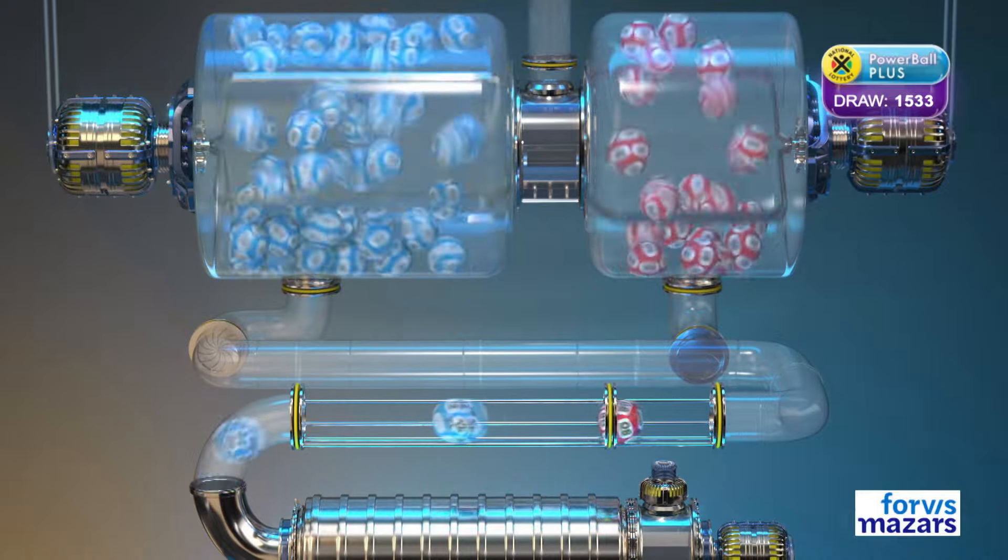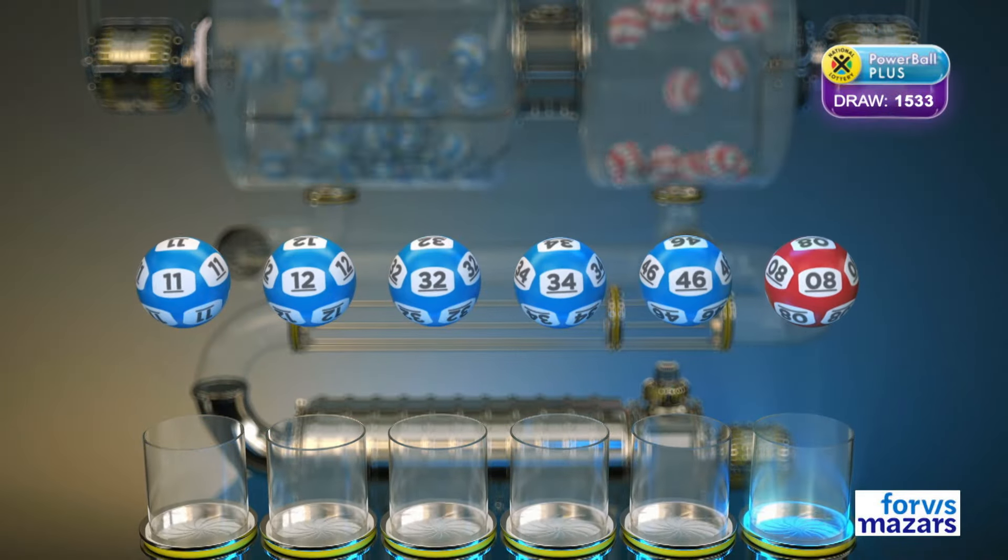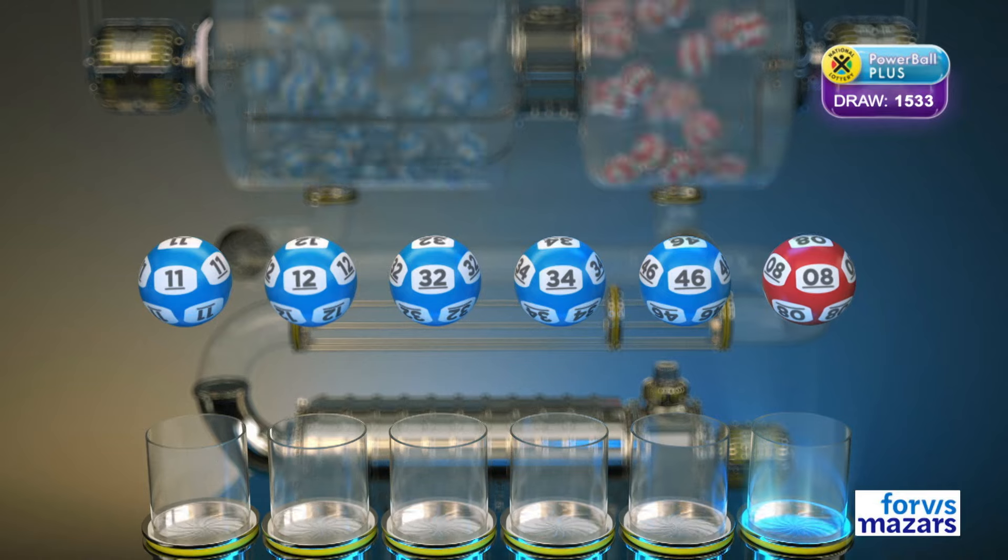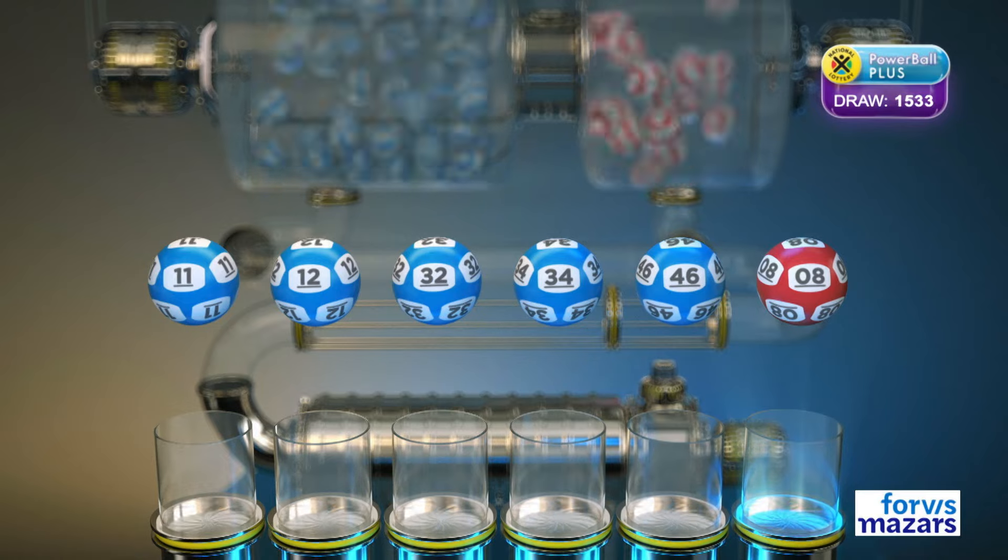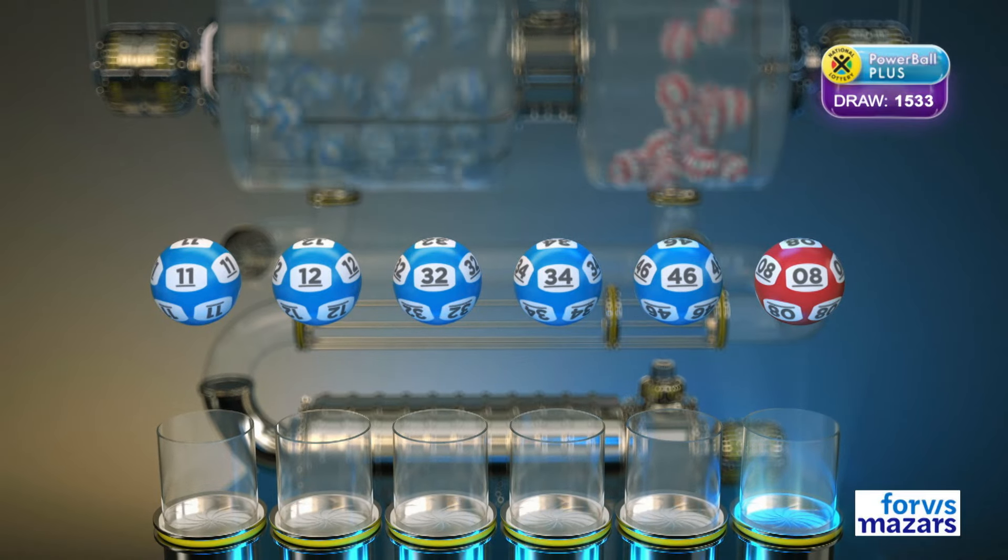Let's recap these numbers in numerical order: eleven, twelve, thirty-two, thirty-four, forty-six, and the Powerball is eight.